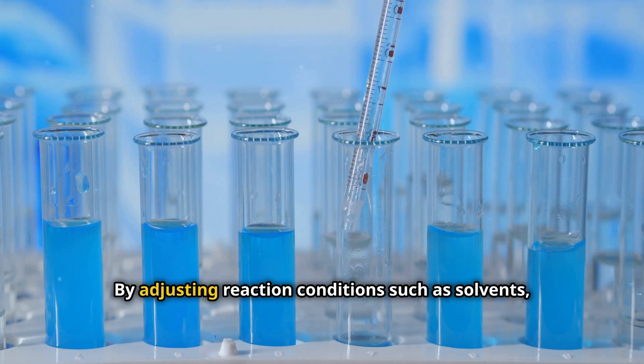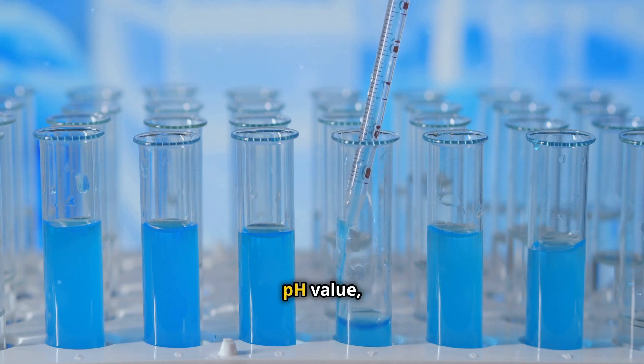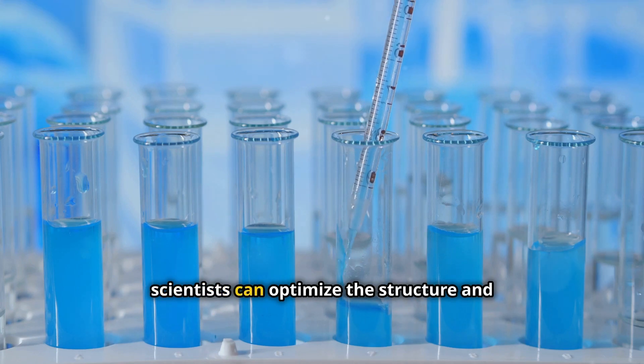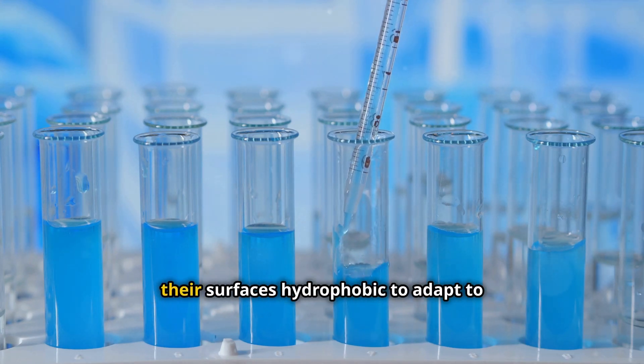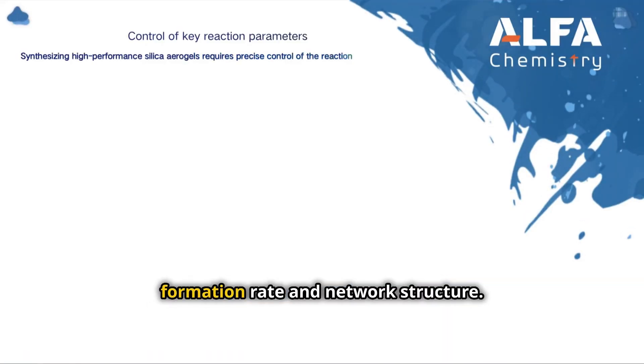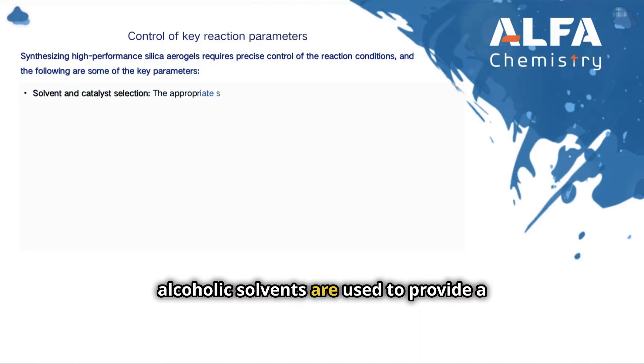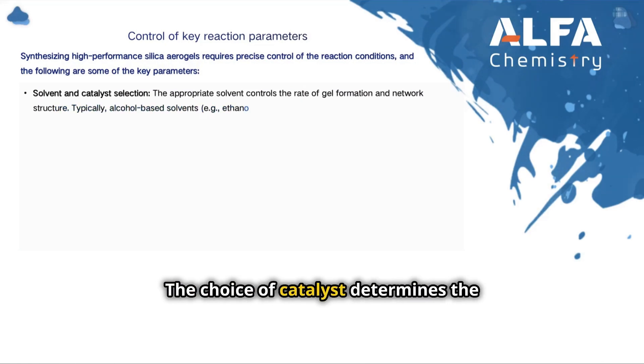Synthesis of high-performance silica aerogels requires precise control of reaction conditions. By adjusting reaction conditions such as solvents, catalysts, pH value, and temperature, scientists can optimize the structure and performance of aerogels and even make their surfaces hydrophobic to adapt to more complex environments. Appropriate solvents can control the gel formation rate and network structure; typically alcoholic solvents are used to provide a uniform dissolution environment.